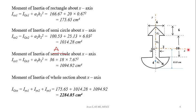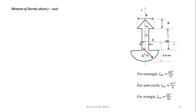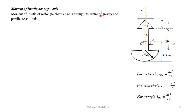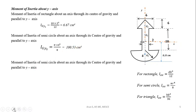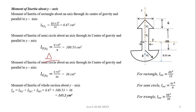For the moment of inertia about the y-axis, since the figure is symmetric, we can directly add the individual contributions without using the parallel axis theorem. IGy1 = db³/12 = 6.67 cm⁴. IGy2 = πr⁴/8 = 100.53 cm⁴. IGy3 = bh³/36 = 36 cm⁴. The total moment of inertia about the y-axis: IGys = IGy1 + IGy2 + IGy3 = 143.2 cm⁴.